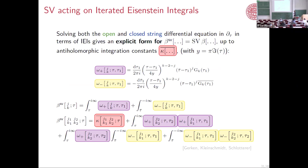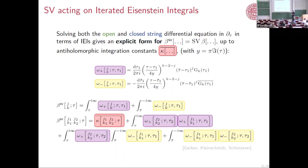You can fix these kappas, but you have to use some other information. For instance, if you look at modular graph forms and have some basis of them, and you know how to express them in terms of these beta SVs, then you can use the reality properties of modular graph forms to fix these kappas. They have some fixed reality properties. At the depth-two case, we have a closed formula inferred by looking at a lot of data. What I've presented so far does not suffice to fix these kappas — you need extra ingredients from the reality properties of modular graph forms.